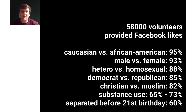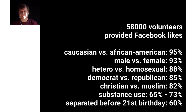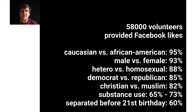This can be done for a variety of attributes. In this dataset of 58,000 volunteers who provided Facebook Likes, we can make predictions with quite high accuracy. We can distinguish whether somebody is Caucasian or African American, whether somebody is male or female, and predict sexual orientation and political orientation with high accuracy. Religion can also be distinguished, and substance abuse — whether somebody did drugs or not — can be predicted with 65 to 73 percent accuracy.